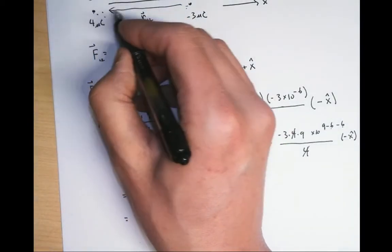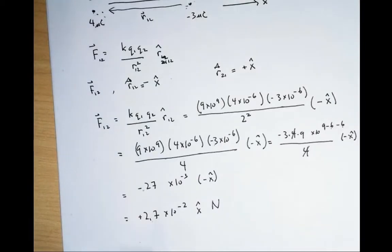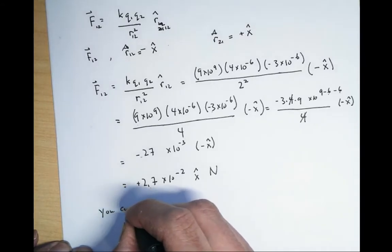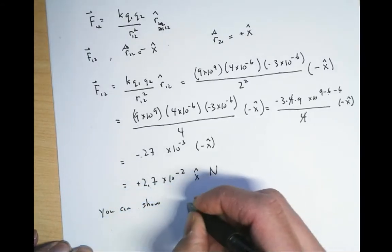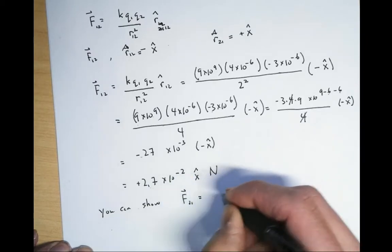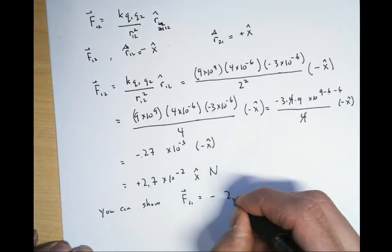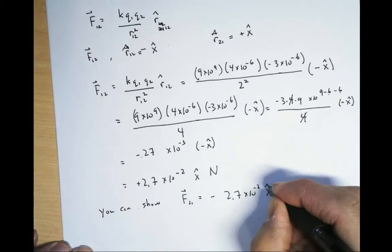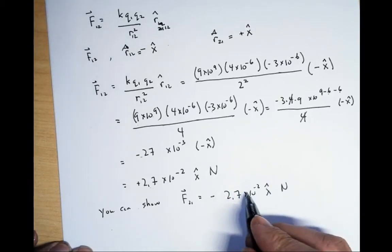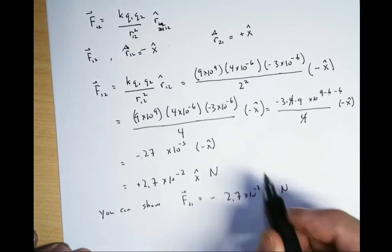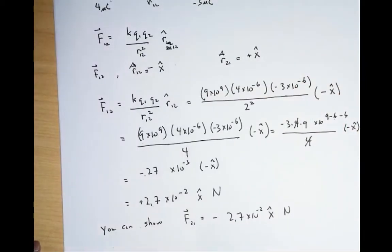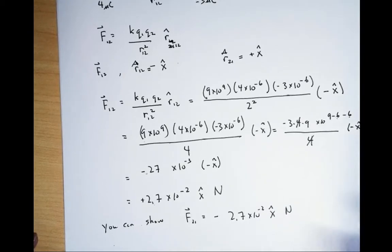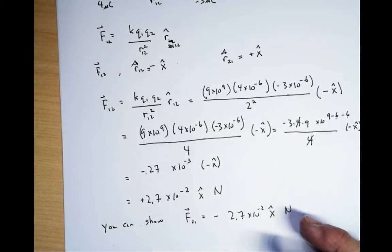So this force is 2.7×10⁻² newtons, attractive toward charge 2. And you can show that the force of 2 on 1 is going to be equal to minus 2.7×10⁻² x-hat newtons — the same magnitude but opposite direction. These are attractive toward each other. That was pretty simple.